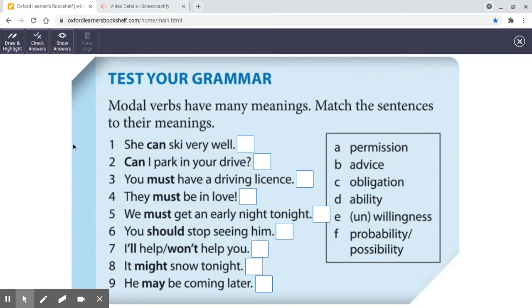She can ski very well. And I tell you what I'm going to do, I'm going to put up the answers as we go through. She can ski very well. What do you think? That's her ability, isn't it? Yeah. OK. And it says D, ability. Well done. You did really well there.